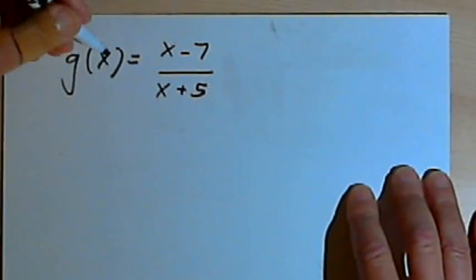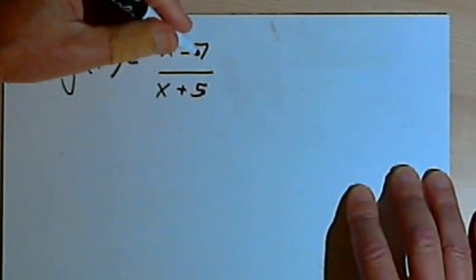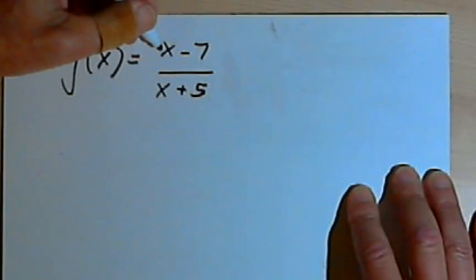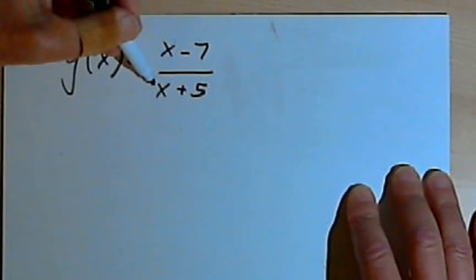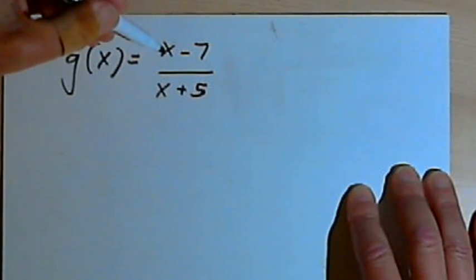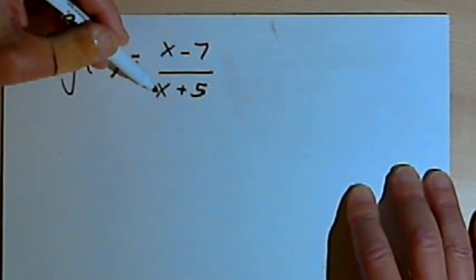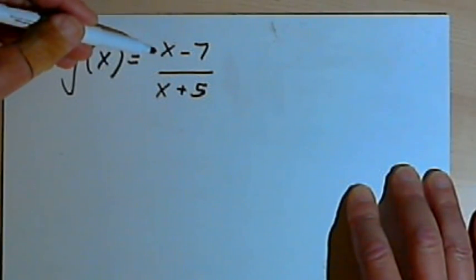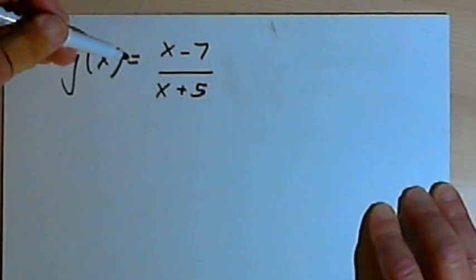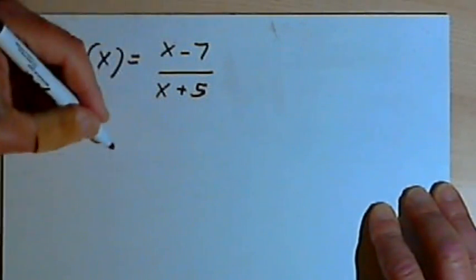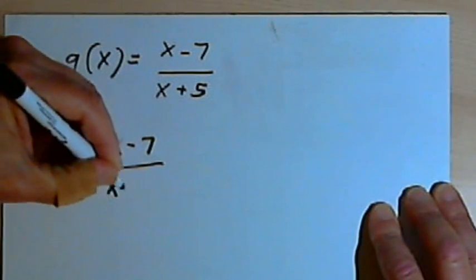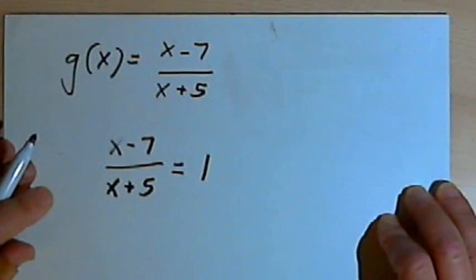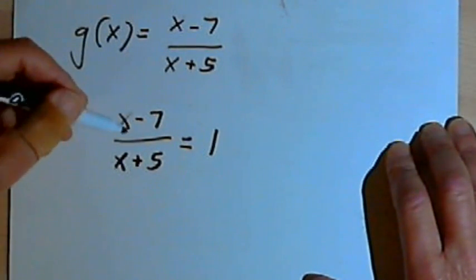This is function g of x. g(x) equals x minus 7 over x plus 5. It's a rational function and we want to see if it's going to intersect its horizontal asymptote. Both the numerator and the denominator are degree 1 polynomials. When the degrees are the same and the leading coefficients are the same — and they are, they're both a leading coefficient of 1 — the horizontal asymptote is going to equal 1. So we'll take the expression x minus 7 over x plus 5 and set it equal to the horizontal asymptote, which is 1. We want to see if we can make that fraction equal to 1.